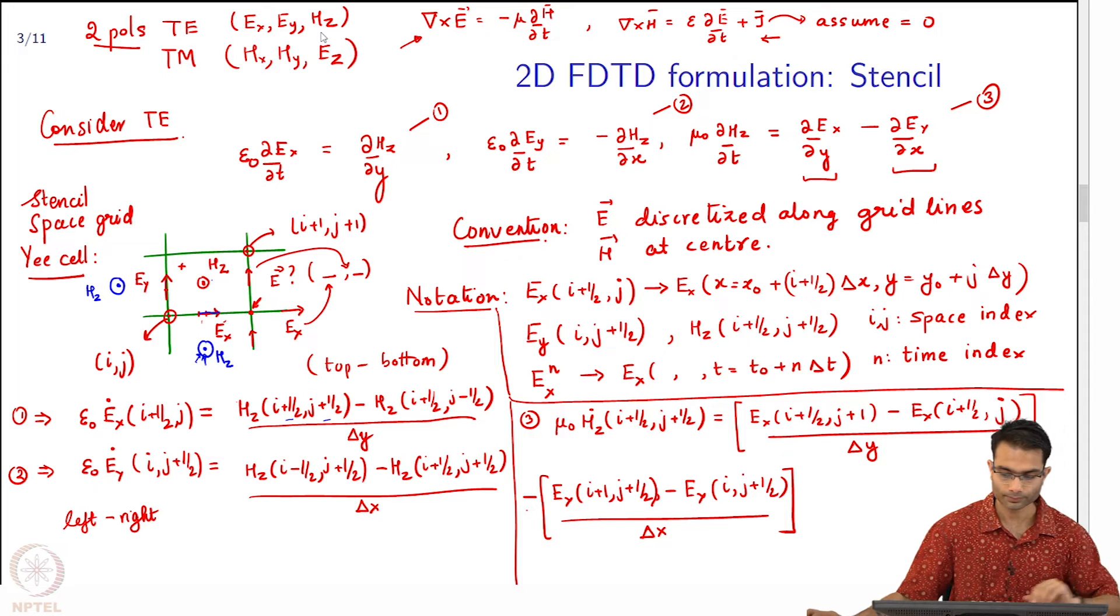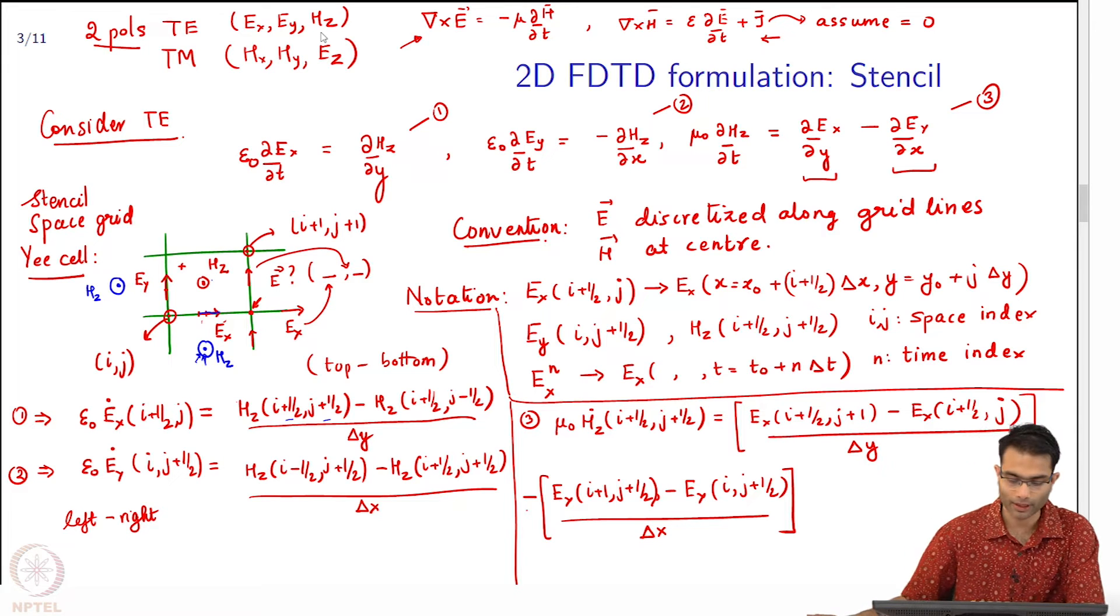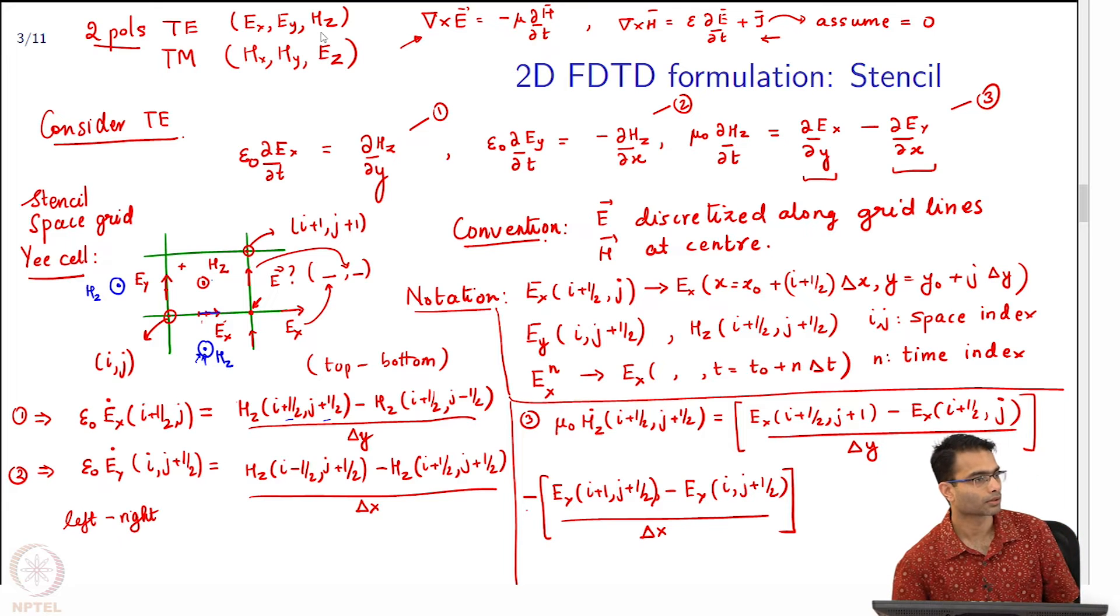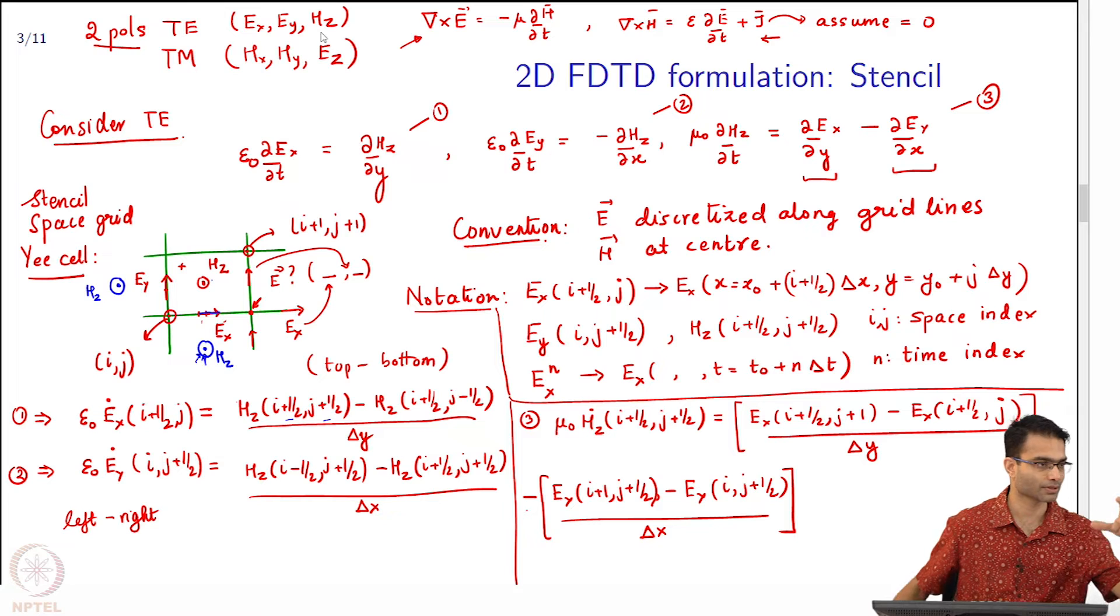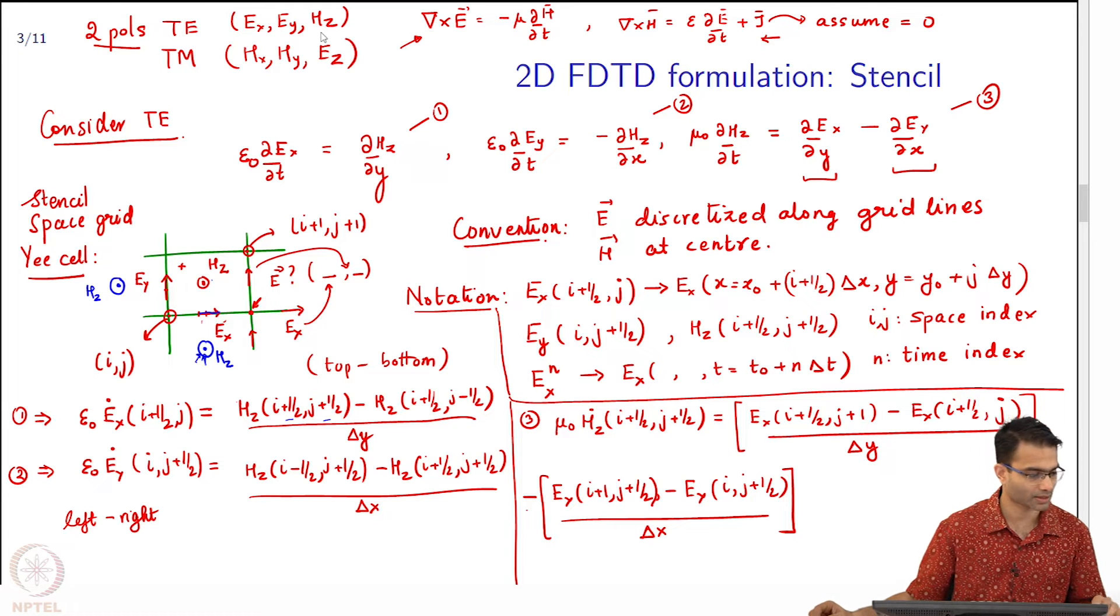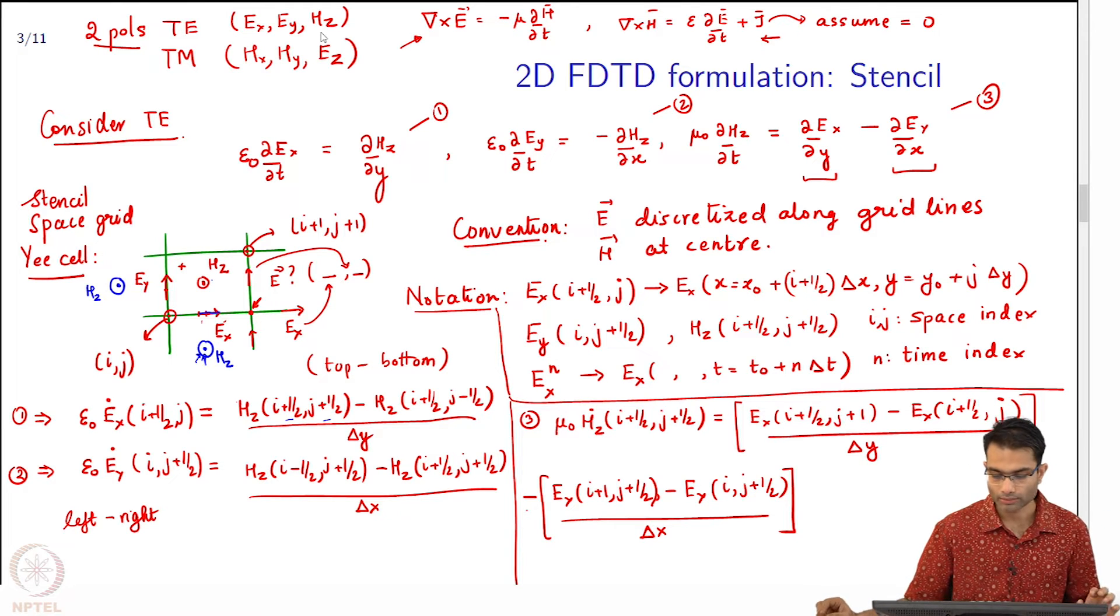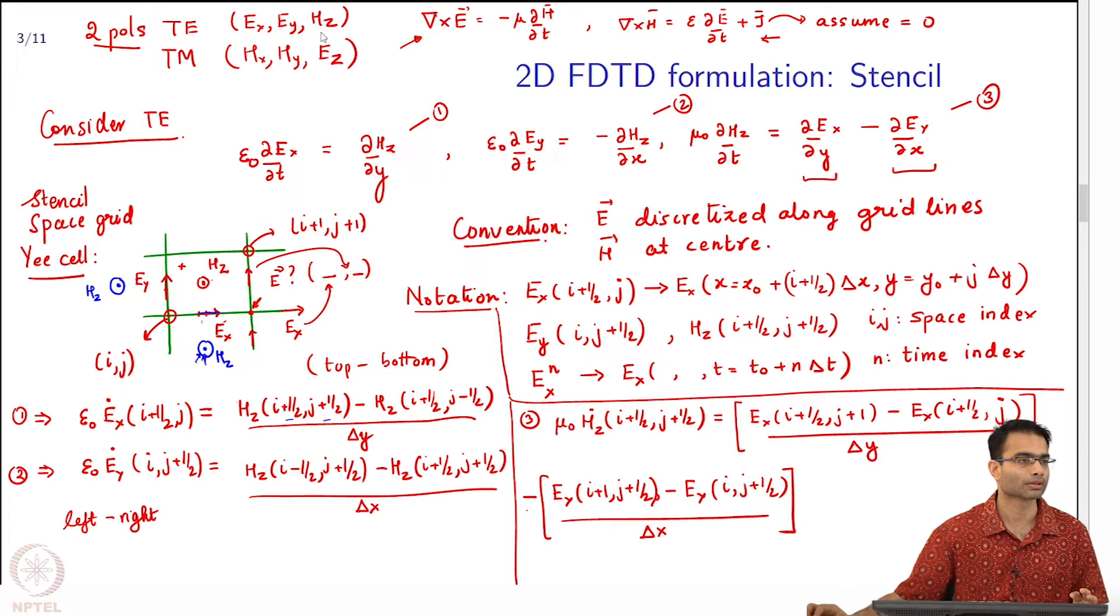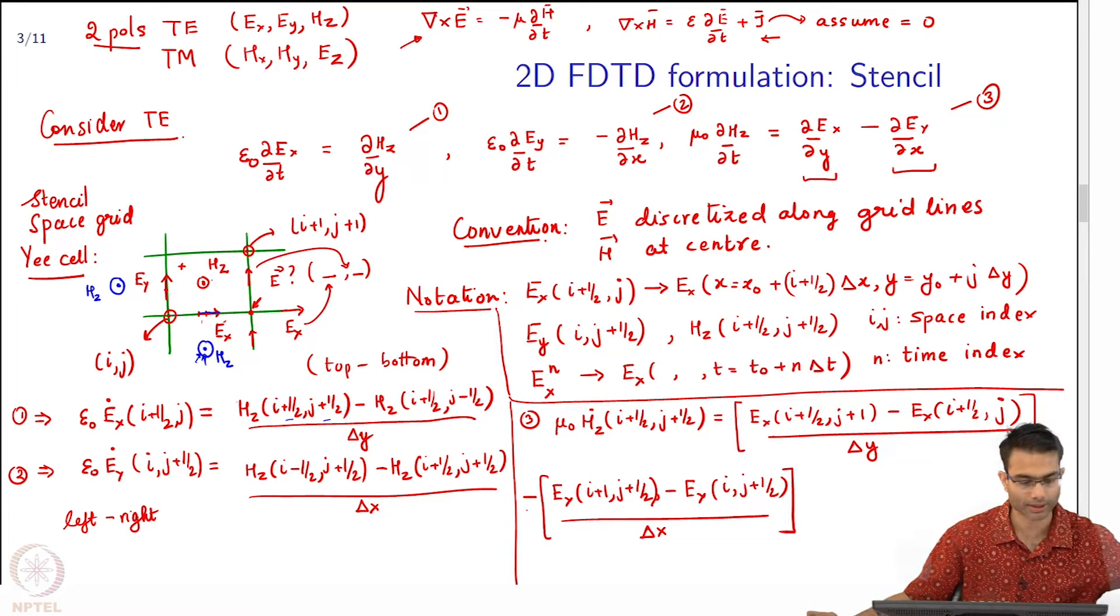Continuing with our finite difference time domain 2D formulation. What we have seen so far is how to deal with space. Spatial derivatives are replaced by finite differences in space across the stencil. Looking at equations 1, 2, and 3, we have dealt with the right hand sides. The next thing left is the left hand side.